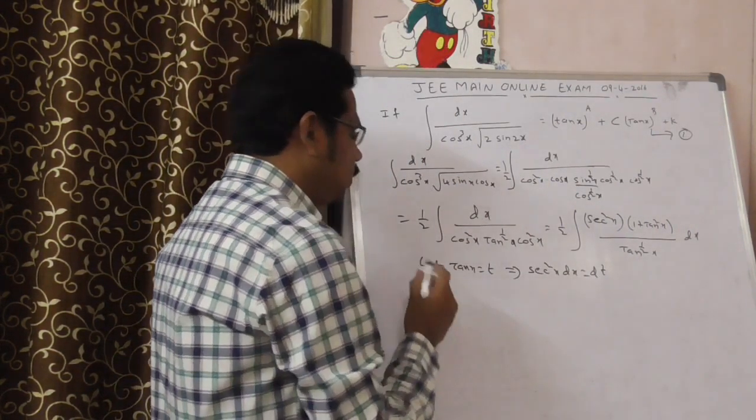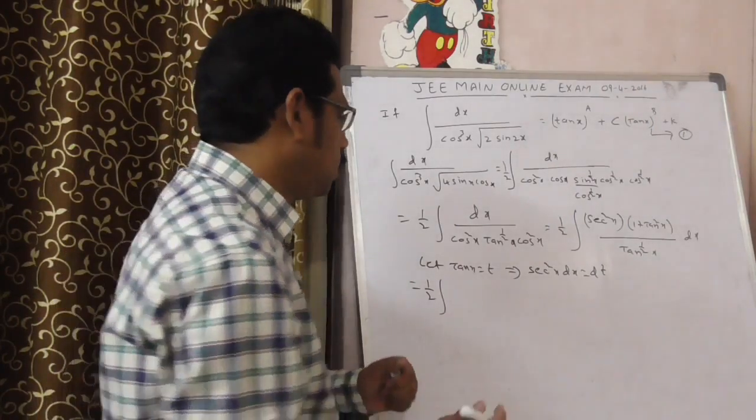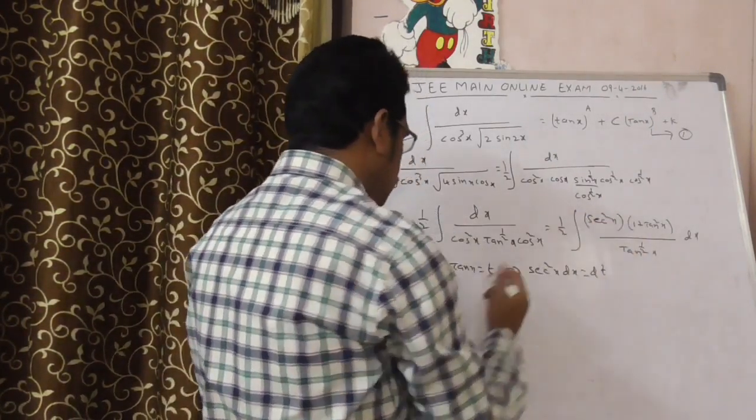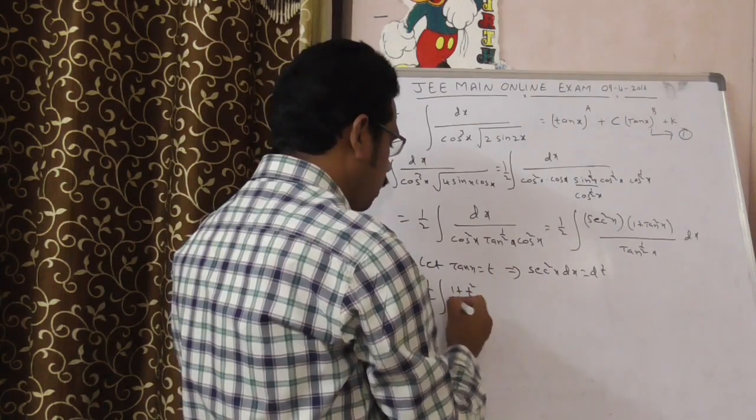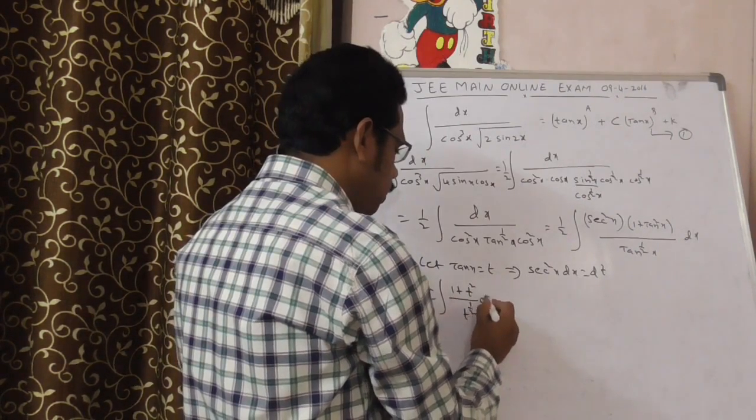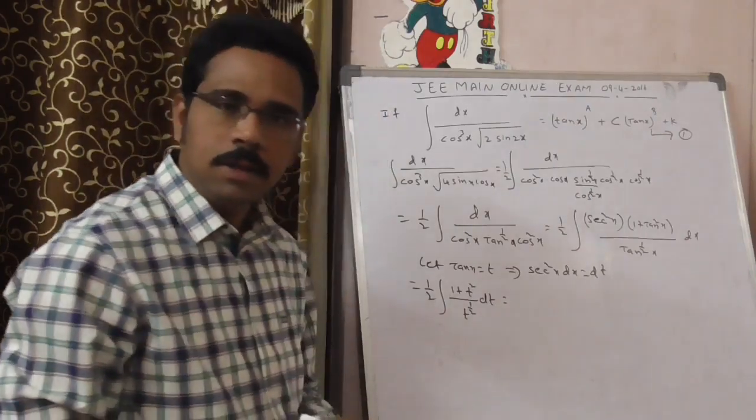Now, change your integration part into t's. What is secant square x dt? Here it is 1 plus tan x equal to t, 1 plus t square by t power 1 by 2 dt.